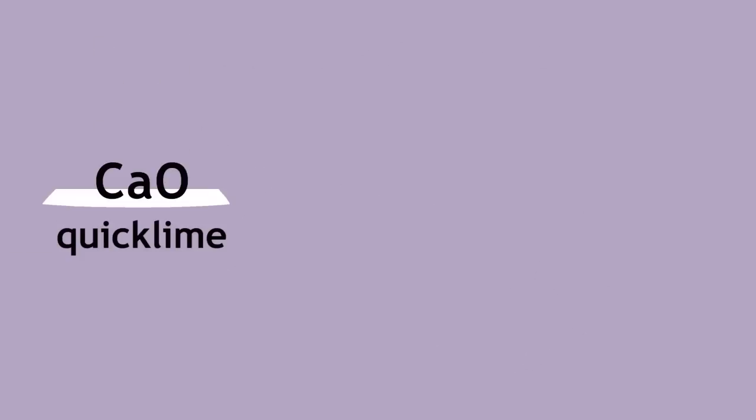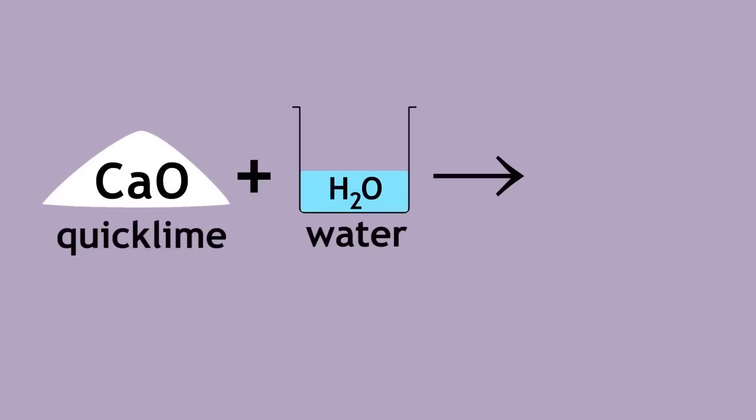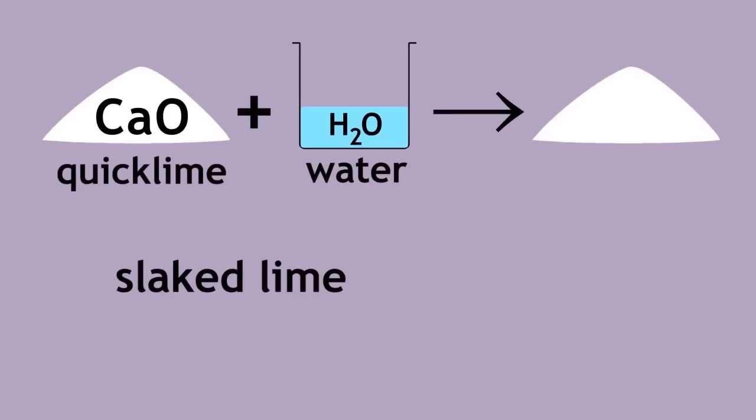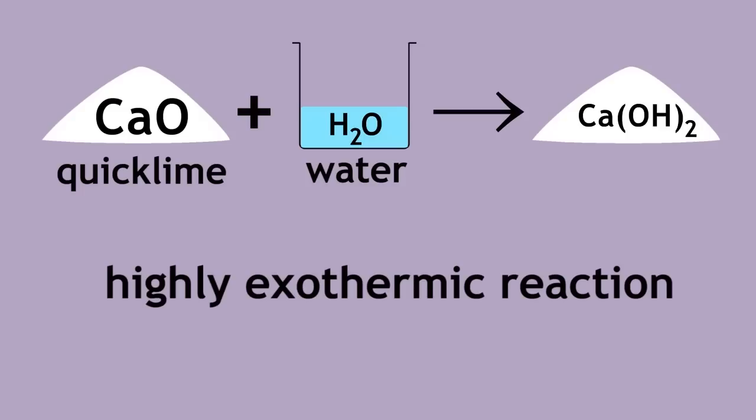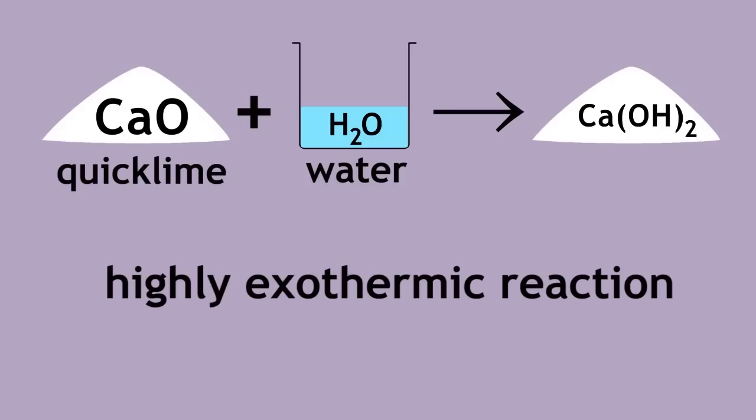The reaction of quicklime with water produces slaked lime. The chemical name for slaked lime is calcium hydroxide. This is a highly exothermic reaction and the industrial process is called slaking.